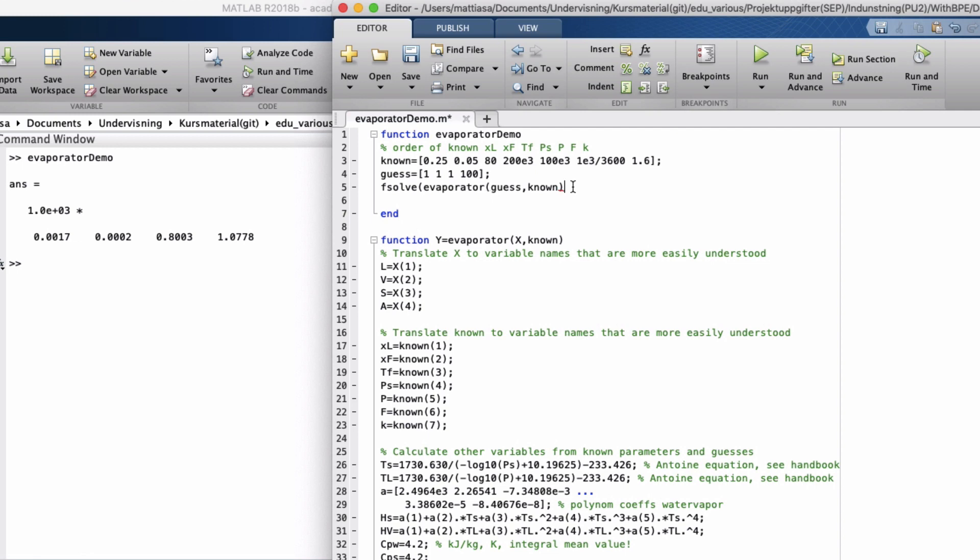Since the function we want fsolve to iterate has two arguments, we need to tell fsolve which argument it should iterate on. We do that by introducing a placeholder, let's call it unknown, and tell fsolve about it by writing at and then parenthesis and then unknown in the parenthesis.